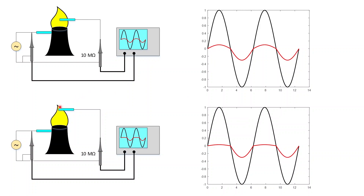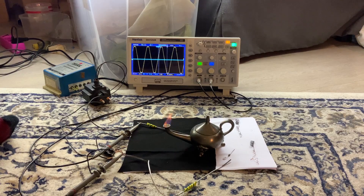Moving the reversed electrode further into the flame, during negative polarity we still have conduction, but during positive polarity the current is very small and the measured voltage is tiny. For electrons, moving the electrode up makes little difference because of their high mobility. But for positive ions, the effect of moving the electrode is clearly visible due to their much faster decay rate.